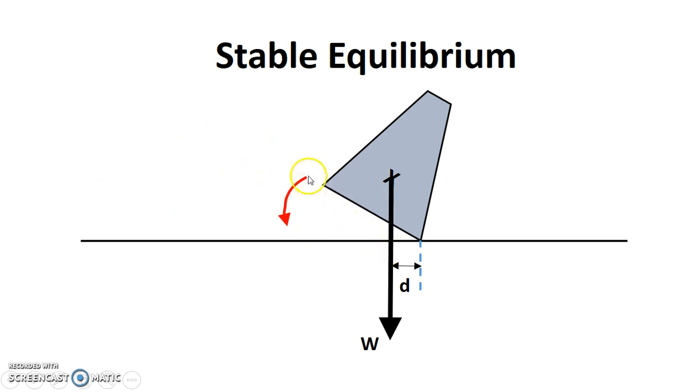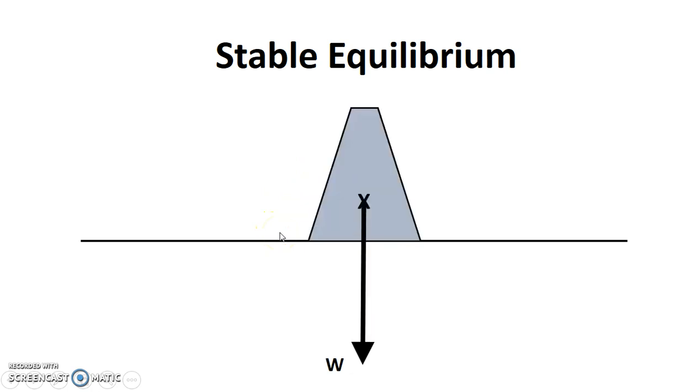So what happens after this? You tilt it slightly, it gives you an anti-clockwise moment, and it will boom, go back to the original position. That's why we call it stable equilibrium. Stable basically means if you tilt it slightly, it will tend to go back to its original position.